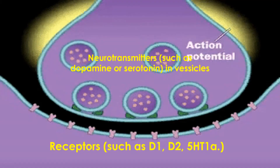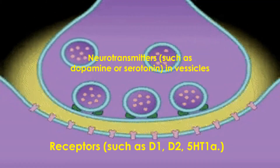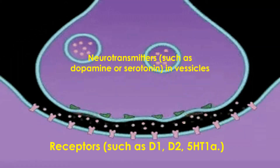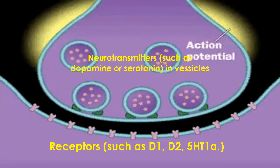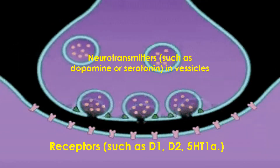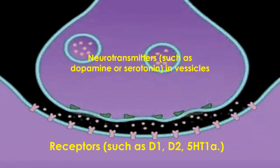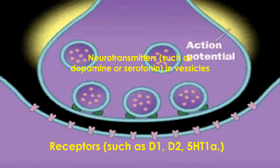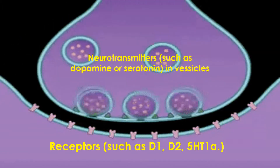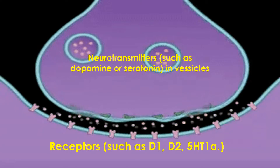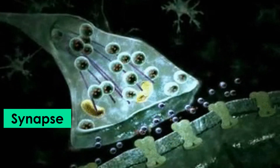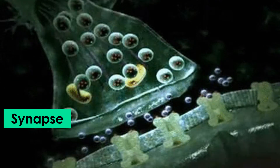The receptors are named after the neurotransmitters. For example, the neurotransmitter dopamine has many different chemical receptors called D1, D2, D3, D4, and D5. Serotonin's chemical name is 5-HT, so its receptors are called 5-HT1A, 5-HT1B, 5-HT2, and so on.